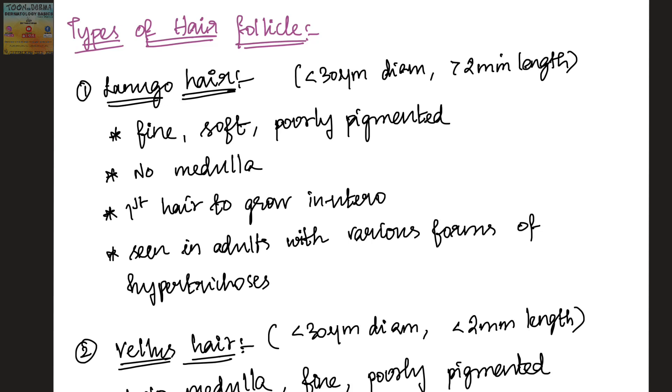This is a short video about the types of hair follicle and certain numerical facts about hair. Coming to types of hair follicle, the first one is lanugo hair. Let's see lanugo hair and vellus hair together.